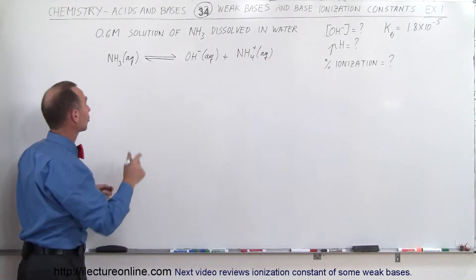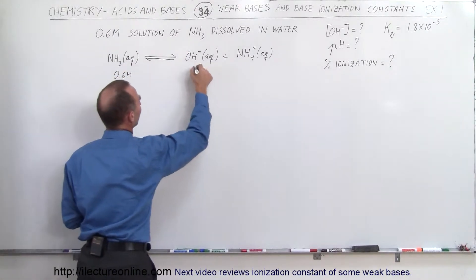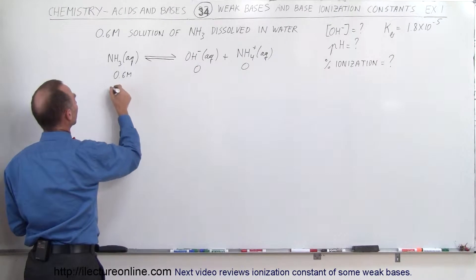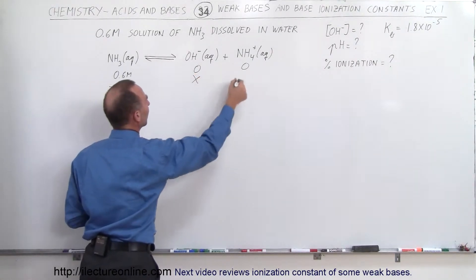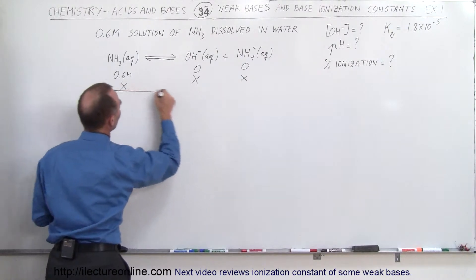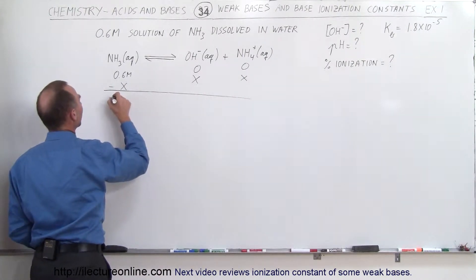So let's say that we start with an initial concentration of 0.6 molar, and of course 0 and 0 for these two, and then we know that we're going to reduce the molarity by X. That means that these will be increased by X, so that we form a final solution that has the molarity of the ammonium, the base, of 0.6 minus X, and here we have X and X.